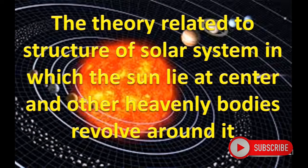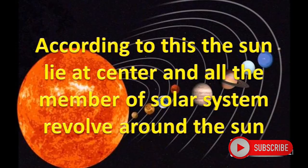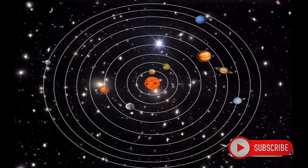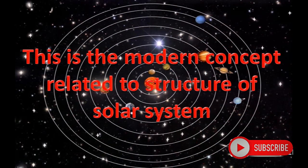The theory related to the structure of the solar system in which the sun lies at the center and other heavenly bodies revolve around it is called heliocentric theory. According to this, the sun lies at the center and all members of the solar system revolve around it. This is the modern concept related to the structure of the solar system.